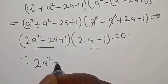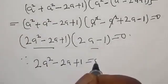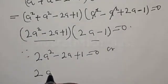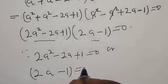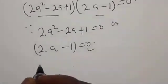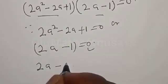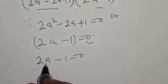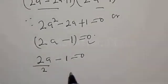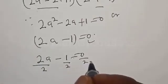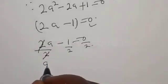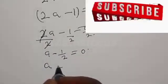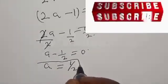From 2A minus 1 equal to 0, let's divide both sides by 2. This gives A minus 1 over 2 equal to 0, so A is equal to 1 over 2. That is one of the roots.